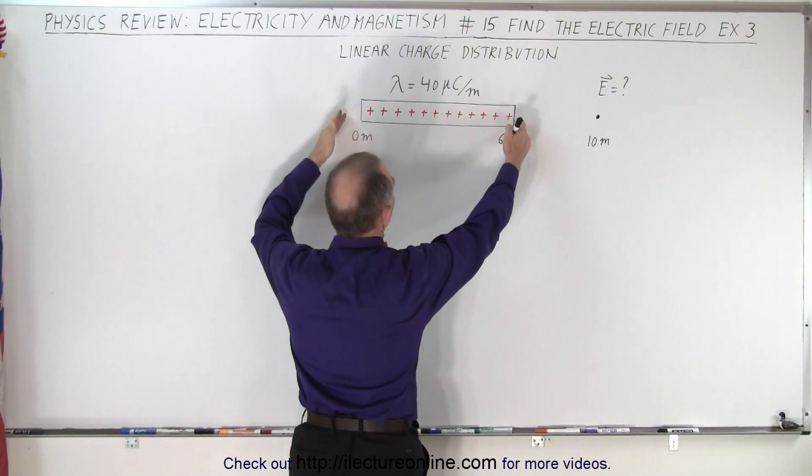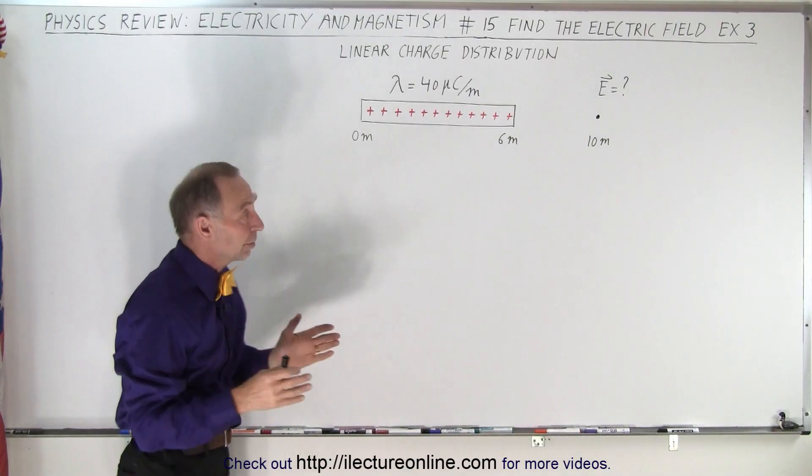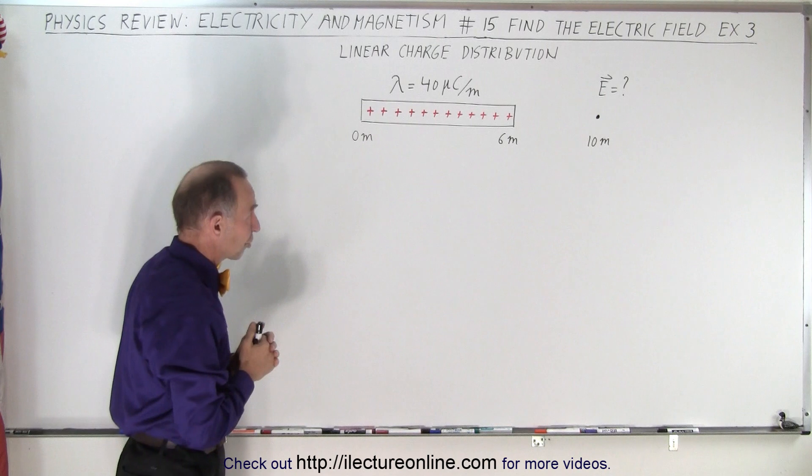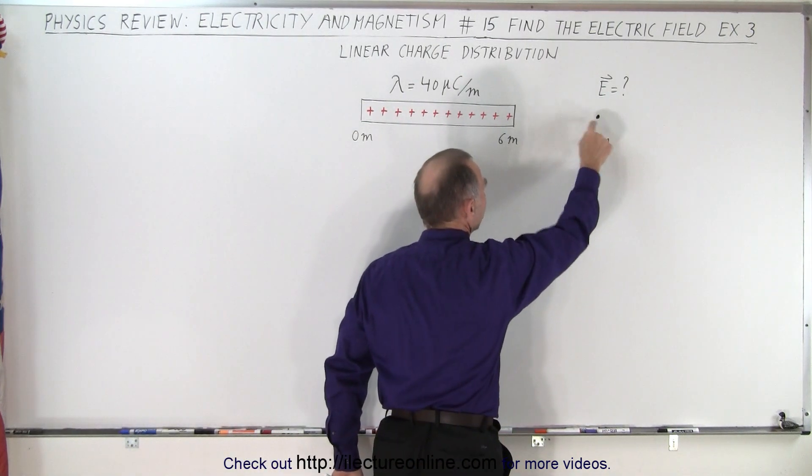We have something that's six meters long and it carries charge at 40 microcoulombs per meter, so when we multiply that, that means there's 240 microcoulombs of charge on that, and we're trying to find the electric field at this location right here.